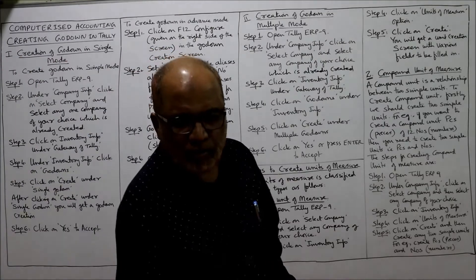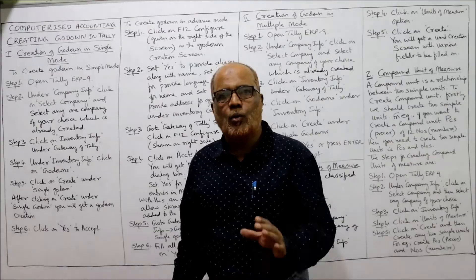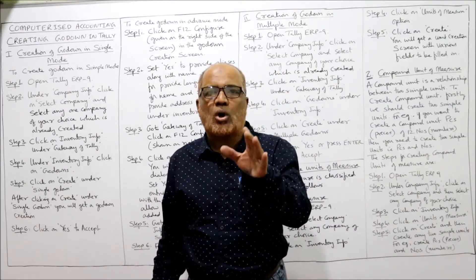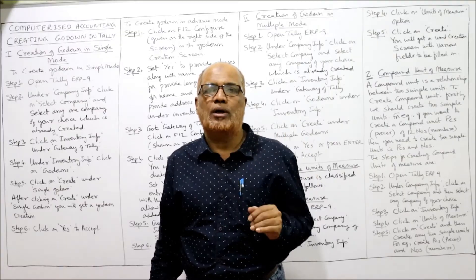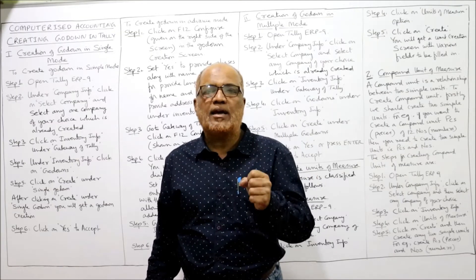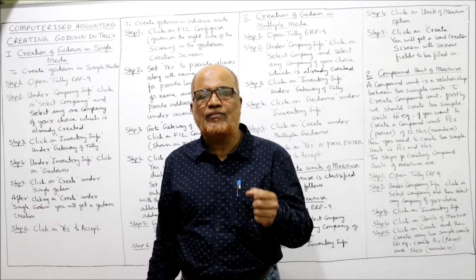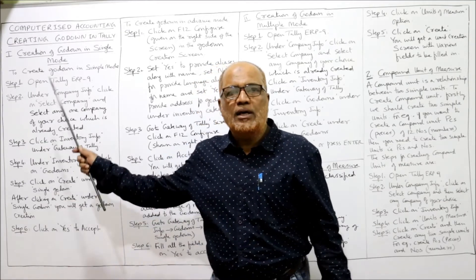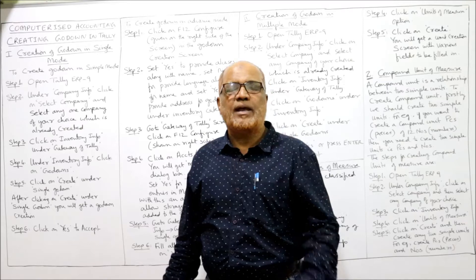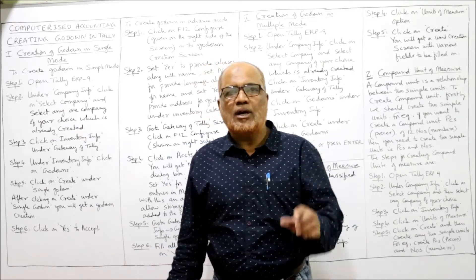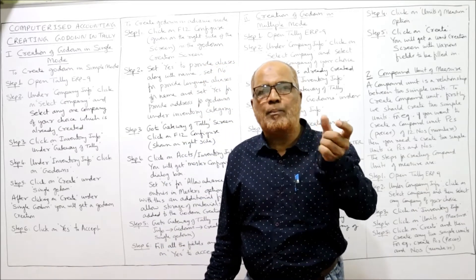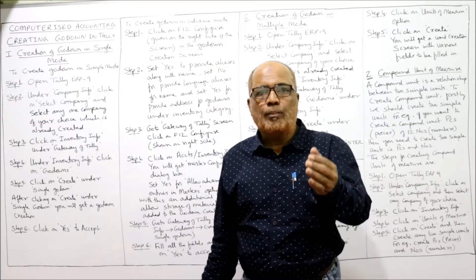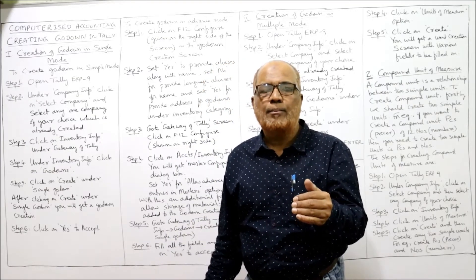Now I'm going to explain about godowns. A godown is a place where all stock items are stored. Godown tracking can also be done with the help of Tally ERP 9. I'll explain step by step how to create a godown, but first note that the godown option is not available by default in Inventory Info.